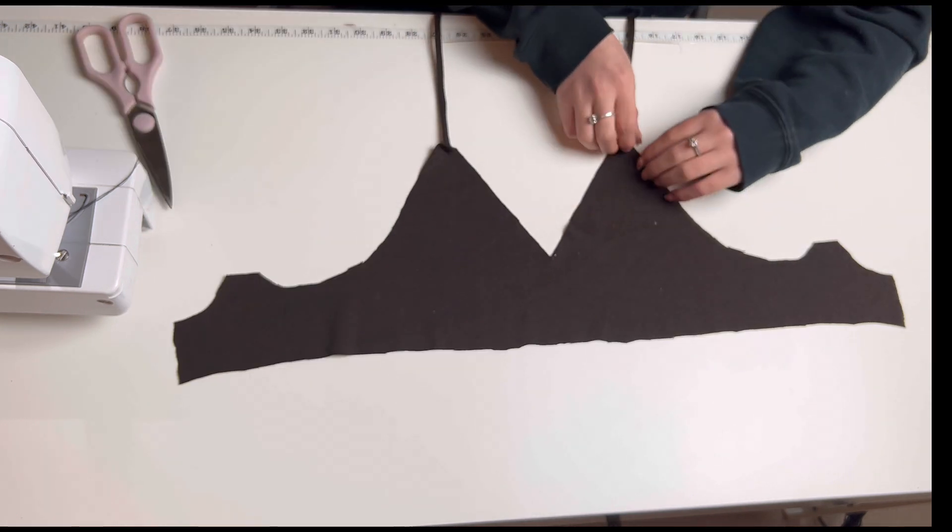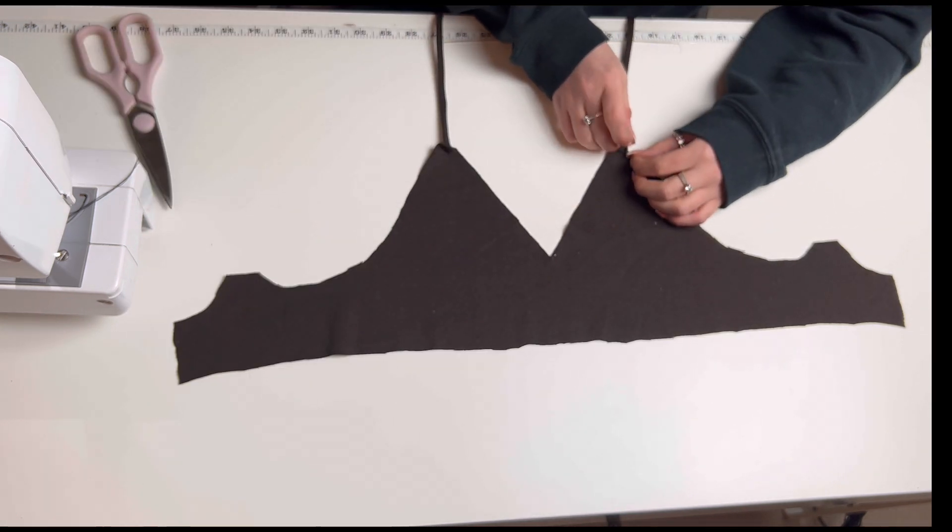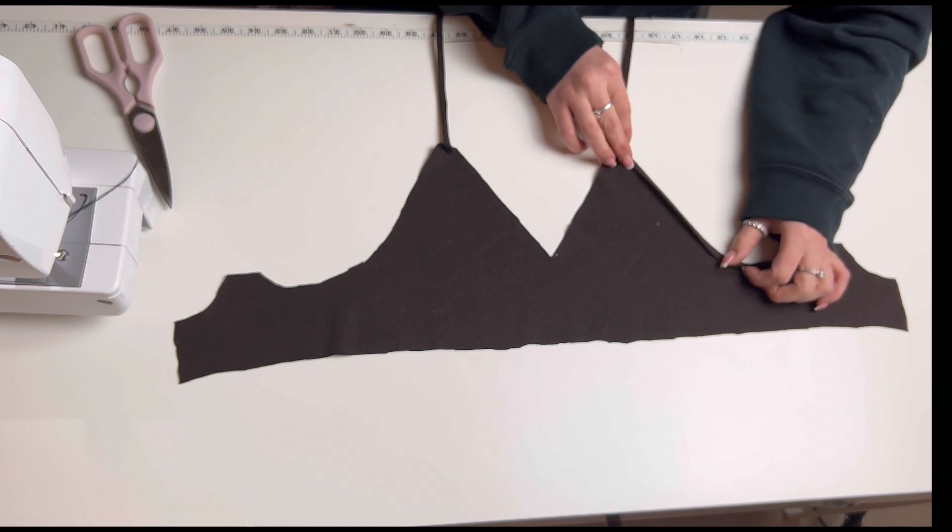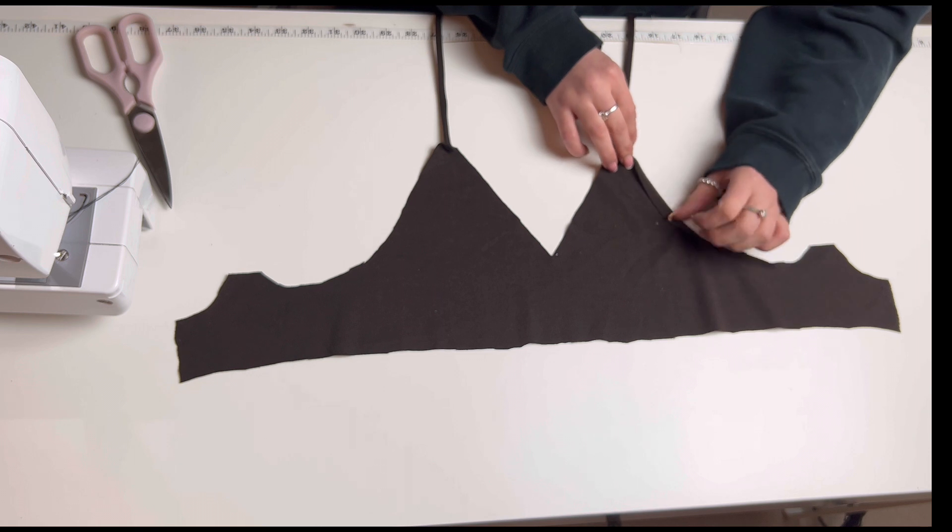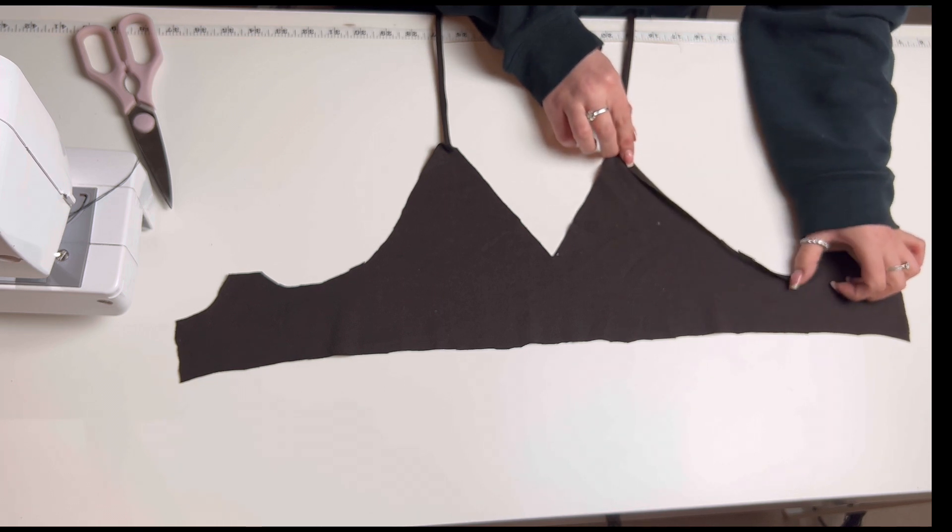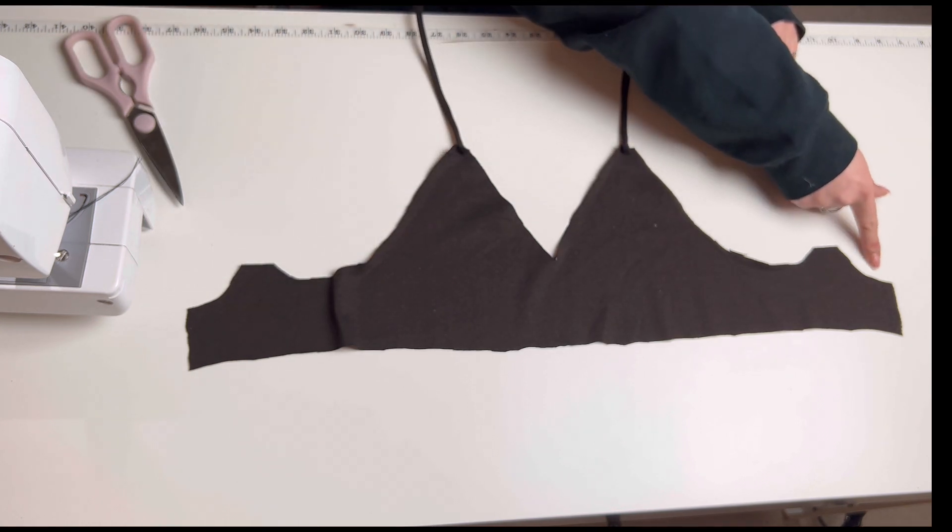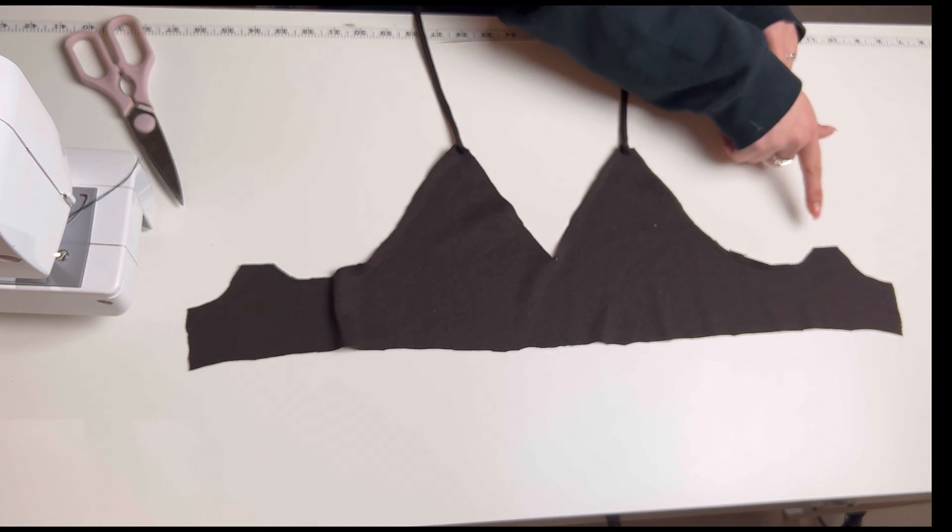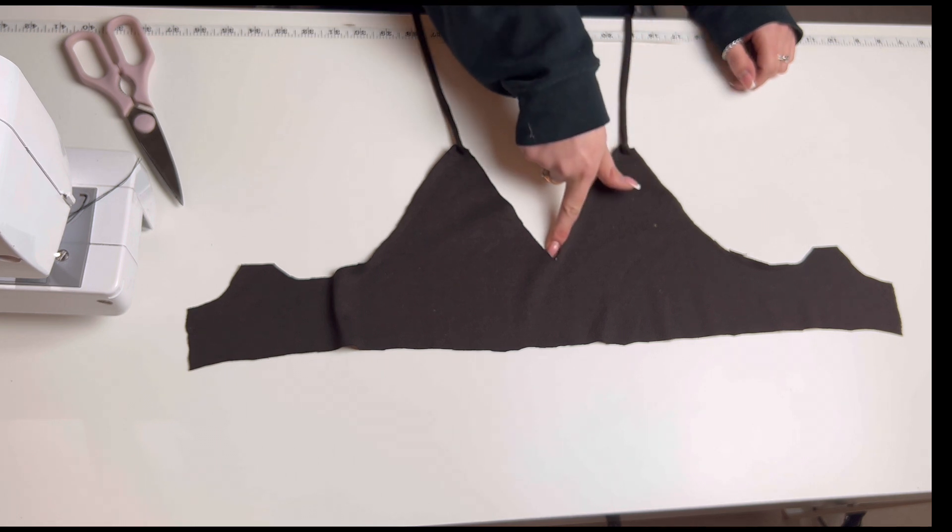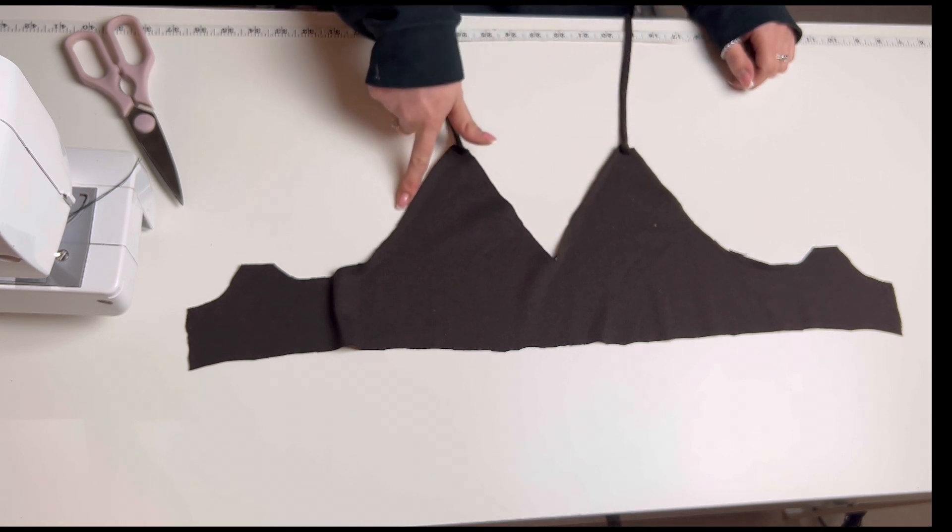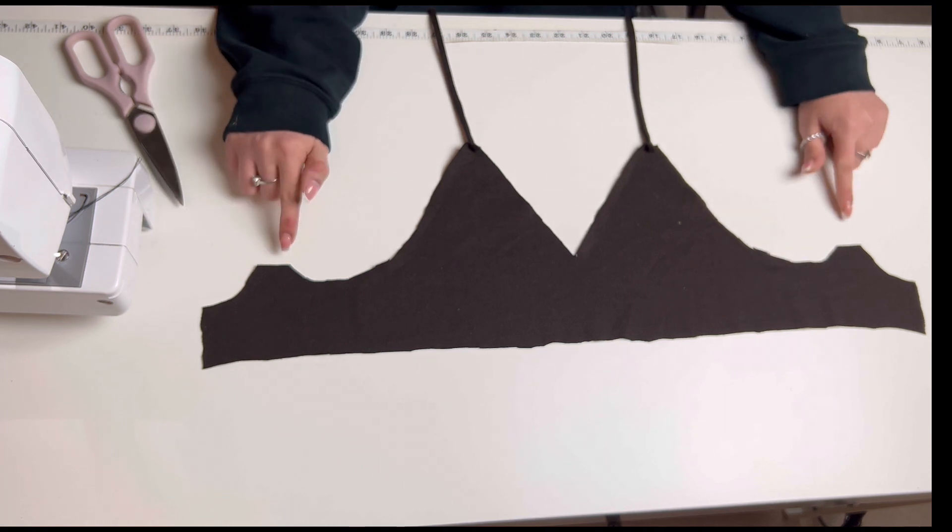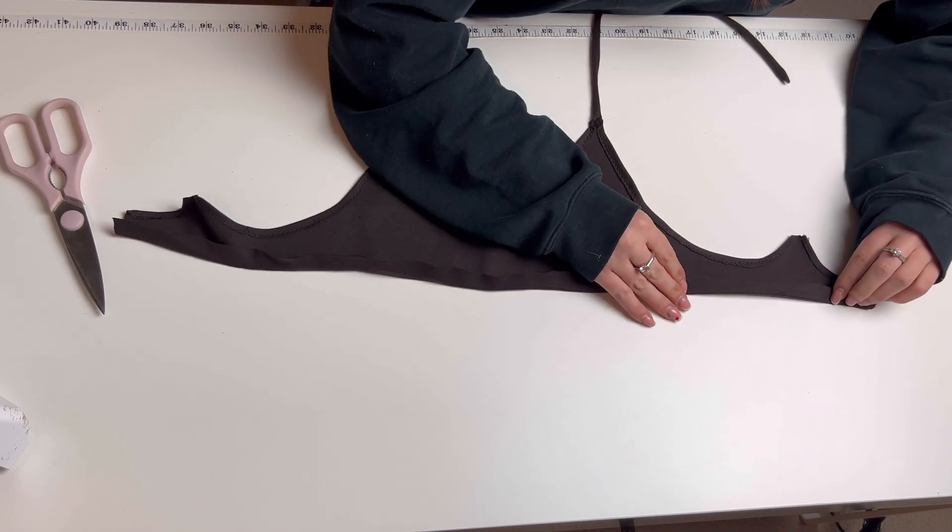Next you want to fold and press all of your raw edges from the top and sew those down with a zig zag stitch. Make sure not to hem the opening of your straps so that we can come back to them and add your straps on.